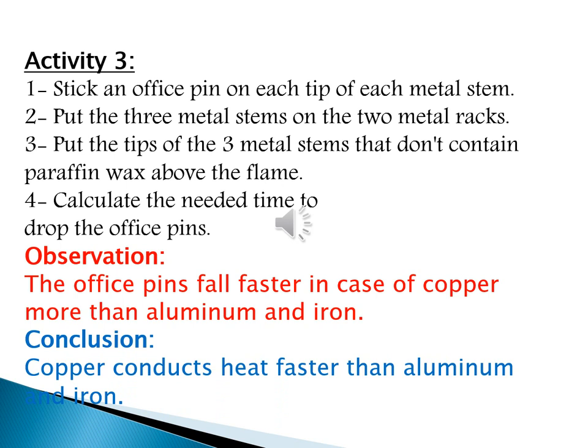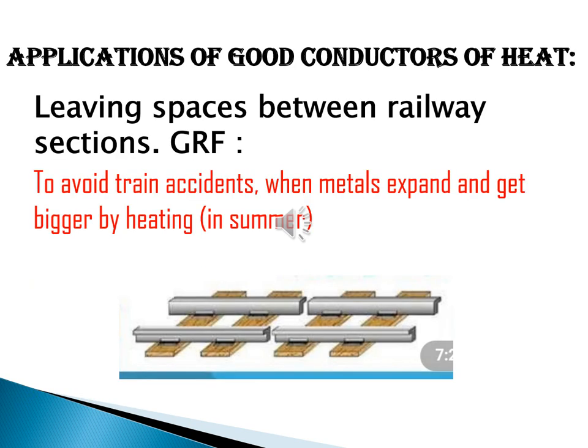In Activity 3, we are talking about the speed of heat conduction through metals. As we said before, all metals are good conductors of heat. We bring a rod of iron, a rod of aluminium, and a rod of copper, stick a button on each one using a drop of wax on one end, and expose the other end to a flame. We observe that the button falls first in the case of copper, then aluminium, then iron. We conclude that copper conducts heat faster than aluminium, faster than iron — copper is the fastest, and iron is the least.